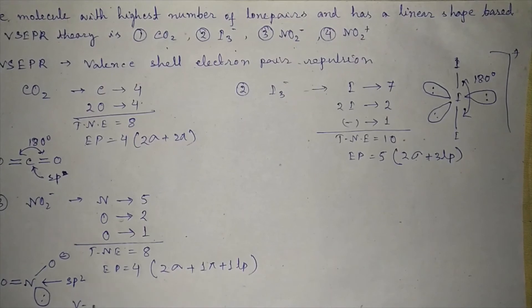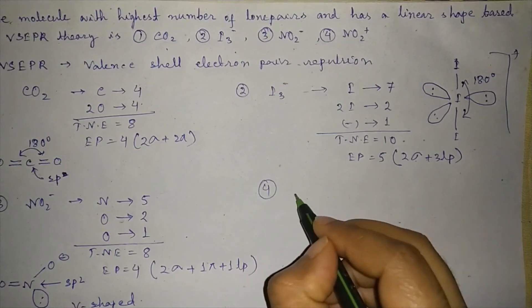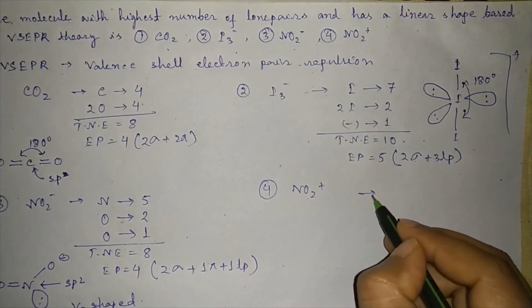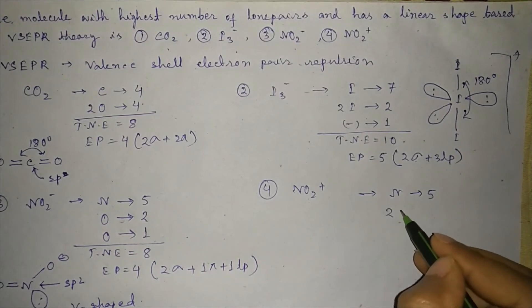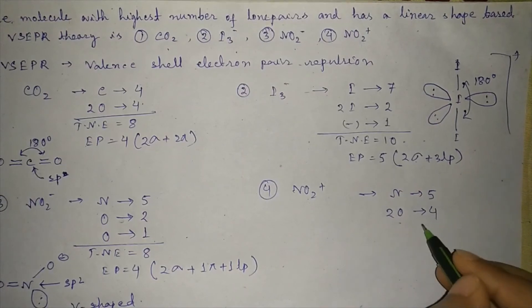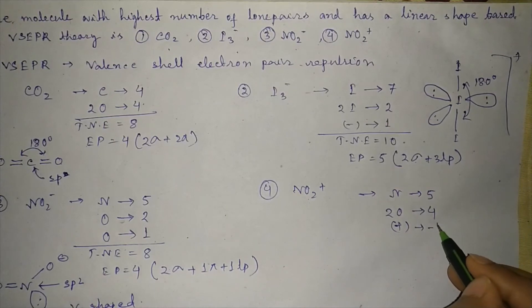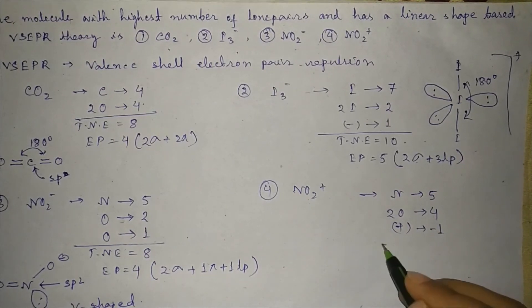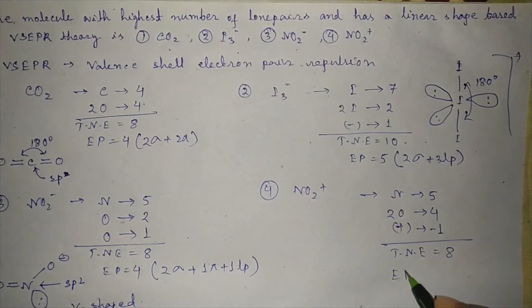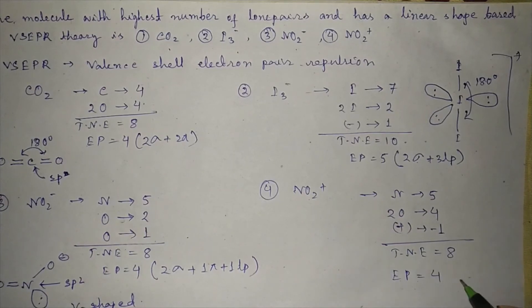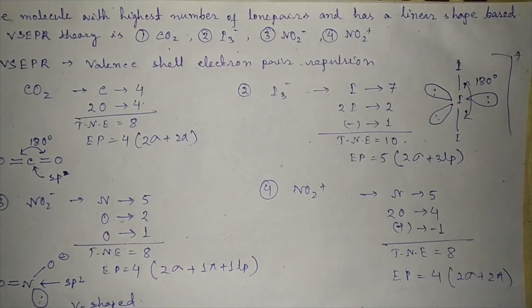In the case of NO₂⁺, the central nitrogen has five valence electrons. Two oxygens contribute four electrons, and the positive charge means we deduct one electron, giving a total of eight electrons — four electron pairs. We have two sigma bonds and two pi bonds, with no lone pairs on nitrogen. The structure is linear.